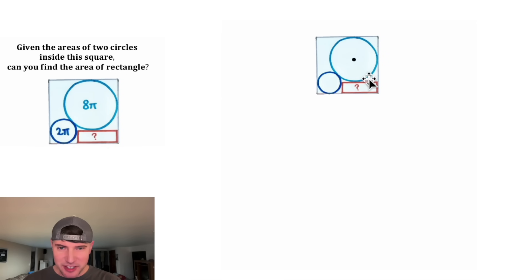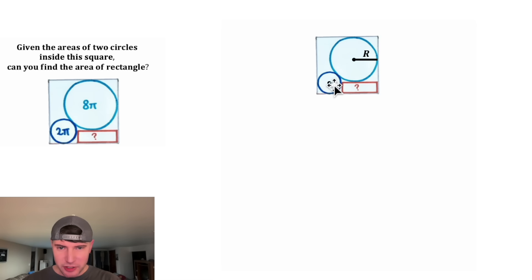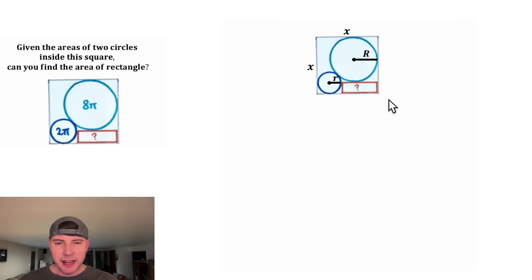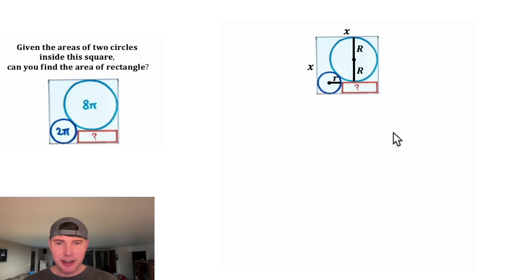First, let's label the centers of each of the circles. Let's construct the radius of the larger circle and call it big R. And let's construct the radius of the little circle and call it little r. Now we're given that this is a square, so let's label the length and the width the same thing, X. And now I want to see if we can express this area in terms of X, big R, and little r. Let's rotate this radius up here and continue it down here.